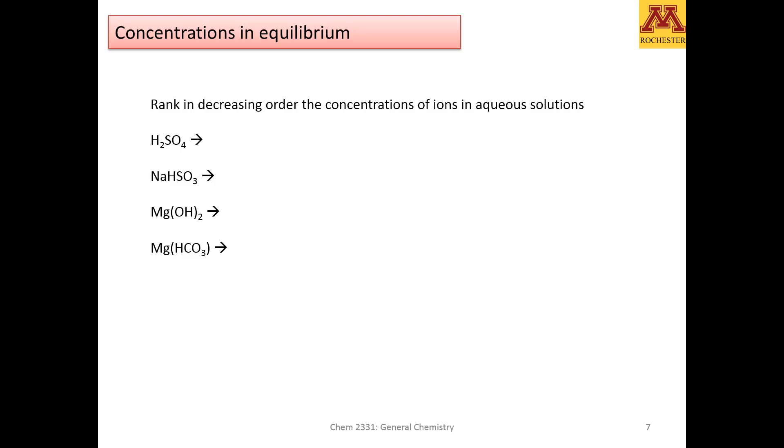So let's see if we can understand, in this case it's ranking, if we can understand this with solving a problem. We have to rank in decreasing order the concentrations of ions in aqueous solution. When you have sulfuric acid, what you have is a complete displacement to the right of the hydronium ion, and notice that you'll need two, and sulfate.